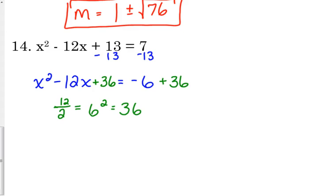Let's factor our perfect square trinomial on the left side. x. It was minus 12. So it's minus. We squared 6. So it's x minus 6 squared. 6 times 6 gives us 36. 6 plus 6 gives us 12. And that is equal to negative 6 plus 36 is 30.